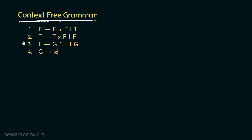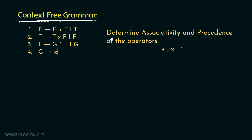Consider this grammar. In this we have the non-terminals e, t, f, and g. The terminals are the plus symbol, the multiplication operator, the caret symbol, and finally id. The start symbol is this uppercase E. Now we have to determine the associativity and the precedence of the operators plus, multiply, and caret — the raised-to-the-power operator.